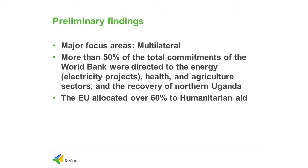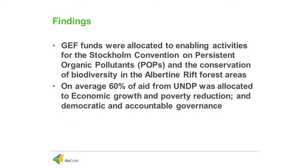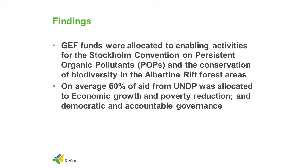In the preliminary findings, 50% of total World Bank commitments were directed to the energy sector, mainly development of electricity projects, mini hydro projects, health, agriculture, and the recovery of northern Uganda. EU aid mostly goes to humanitarian assistance. The World Bank also has a role in control of persistent organic pollutants and conservation of biodiversity in the Albertine forest areas.